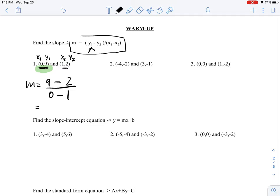So you just do the math. 9 minus 2 is 7, 0 minus 1 is negative 1, and you get slope equals negative 7.